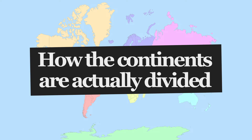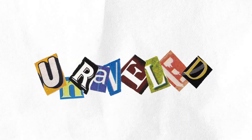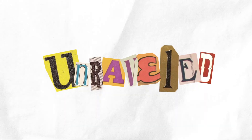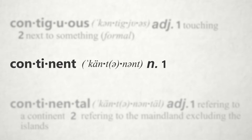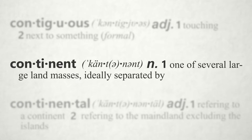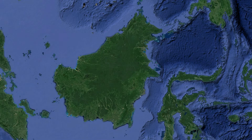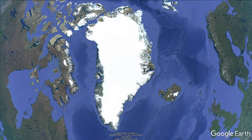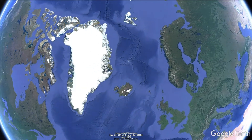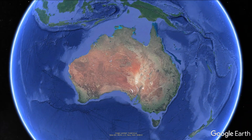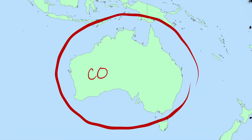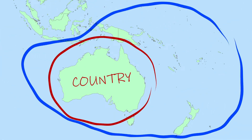This is how the continents are actually divided. But first, let's see what the definition of continent tells us. The general definition says that a continent is one of several large landmasses ideally separated by expanses of water. That's not very helpful at all, because there are massive islands. Greenland is huge and it's not considered a continent, even if it fits the definition. But Australia is considered one — at least, maybe for you it is. For me, this is just a country in a larger continent called Oceania.